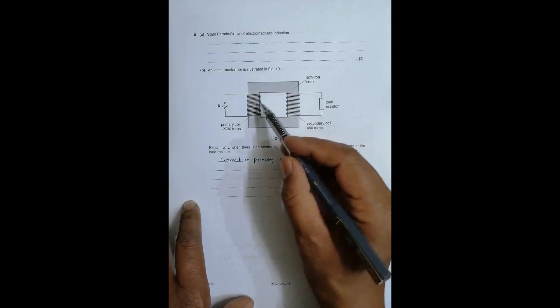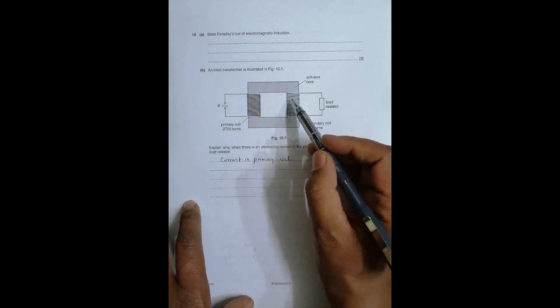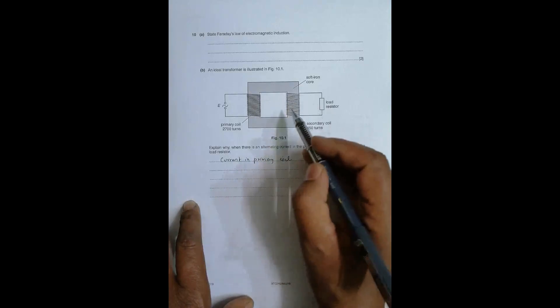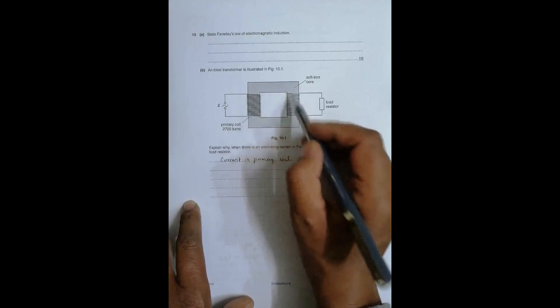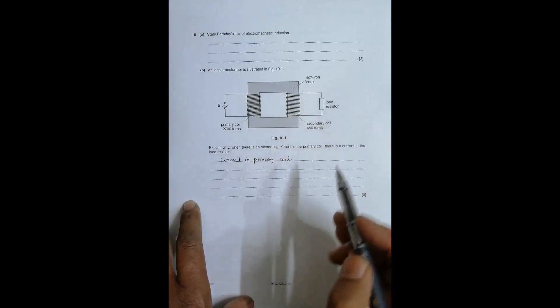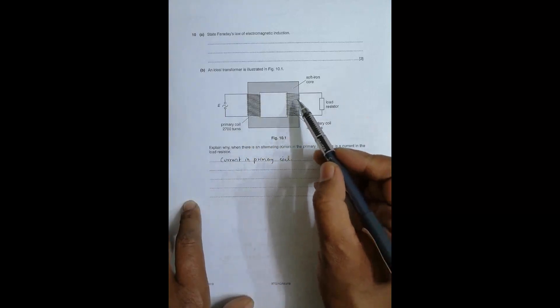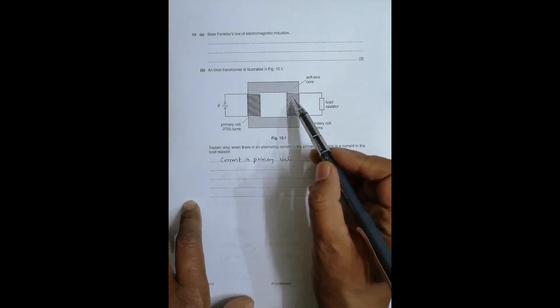Whatever happens here gives us a changing flux - sometimes increasing, sometimes decreasing, sometimes from this side, sometimes from that side. Because of that changing flux in this closed circuit, there will be an EMF.